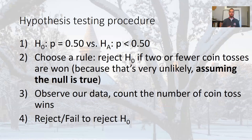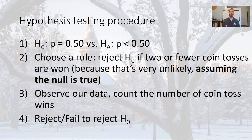Step two: choose a rule. We chose to reject the null hypothesis if two or fewer coin tosses are won. We need a lot of evidence — if I said 'reject if we lose more than half,' losing 51 out of 100 coin tosses isn't convincing evidence that the probability is less than 50%. Step three: observe the data — the Browns lost all 11 coin tosses. Step four: check whether the data matches the rejection rule, and either reject or fail to reject the null hypothesis accordingly.